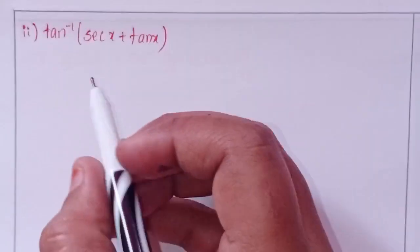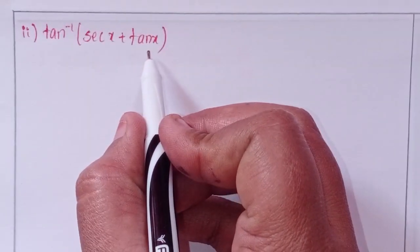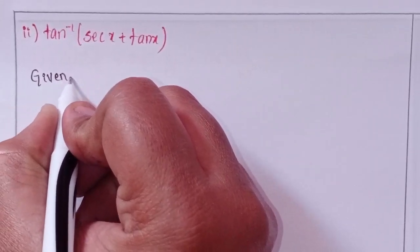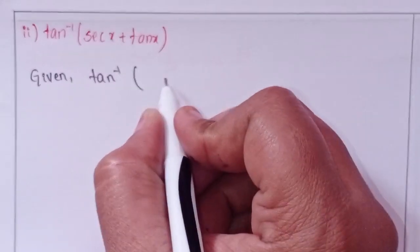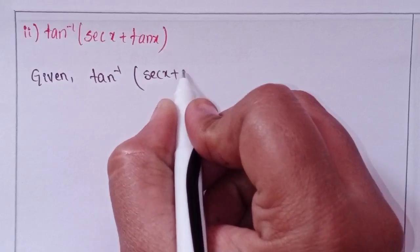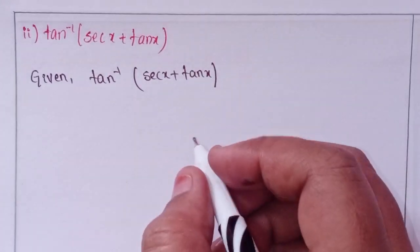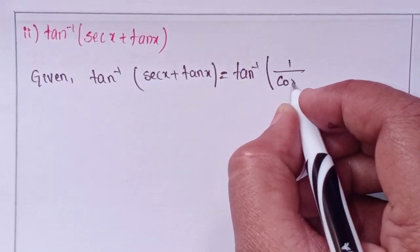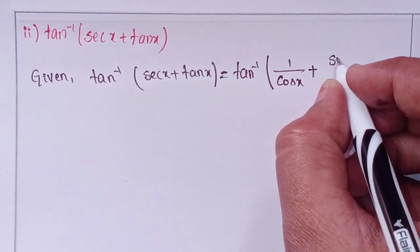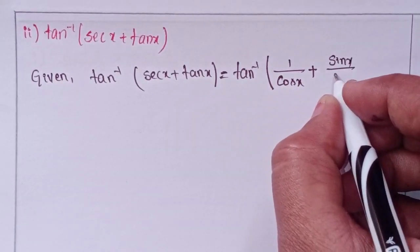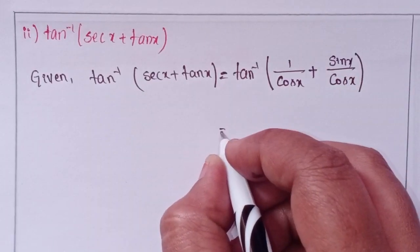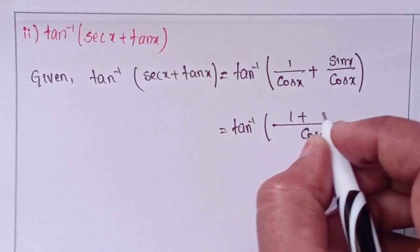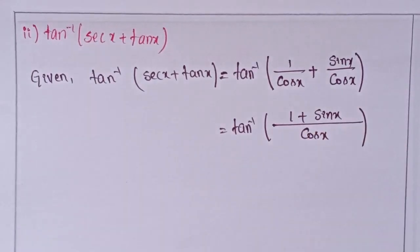Next, second one: tan inverse of secant x plus tan x. We are given tan inverse of sec x plus tan x. Secant can be written as 1 over cos x, and we have 1 plus sin x over 2.